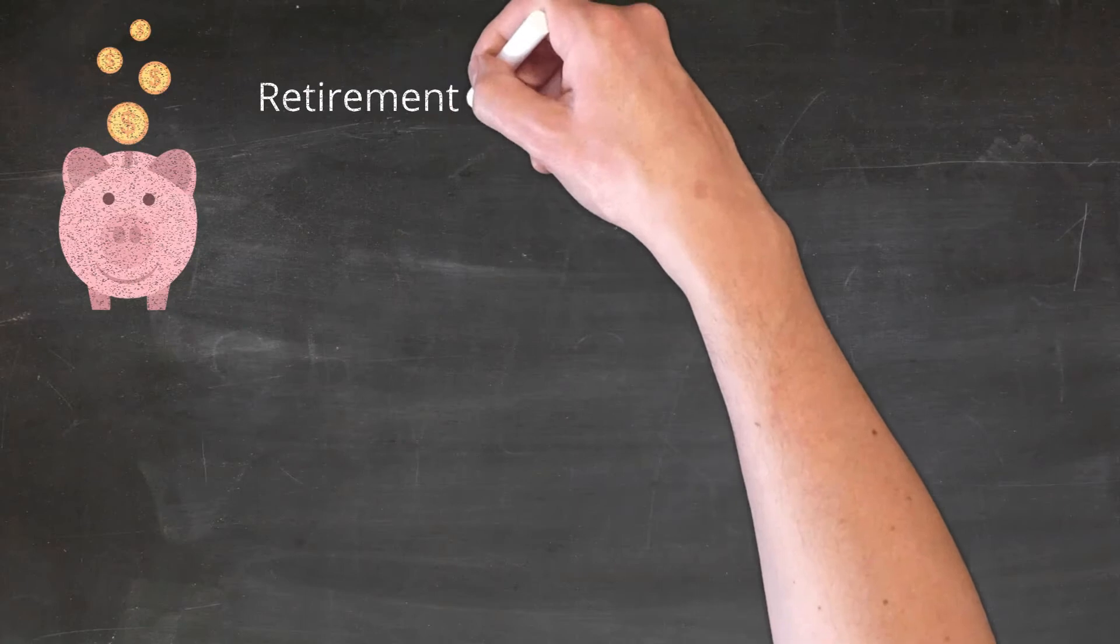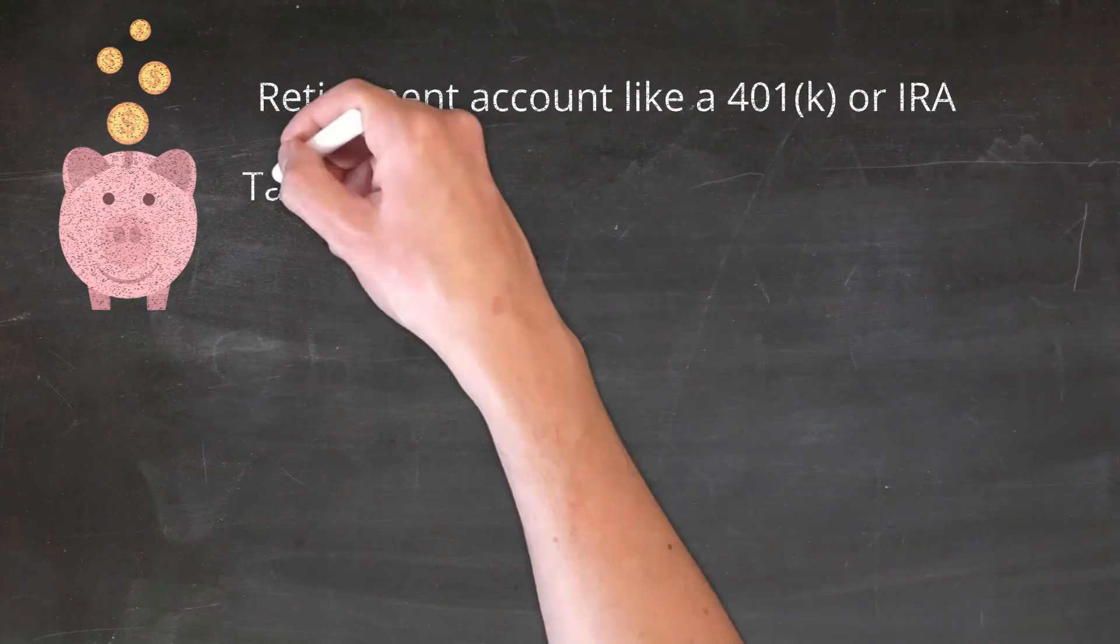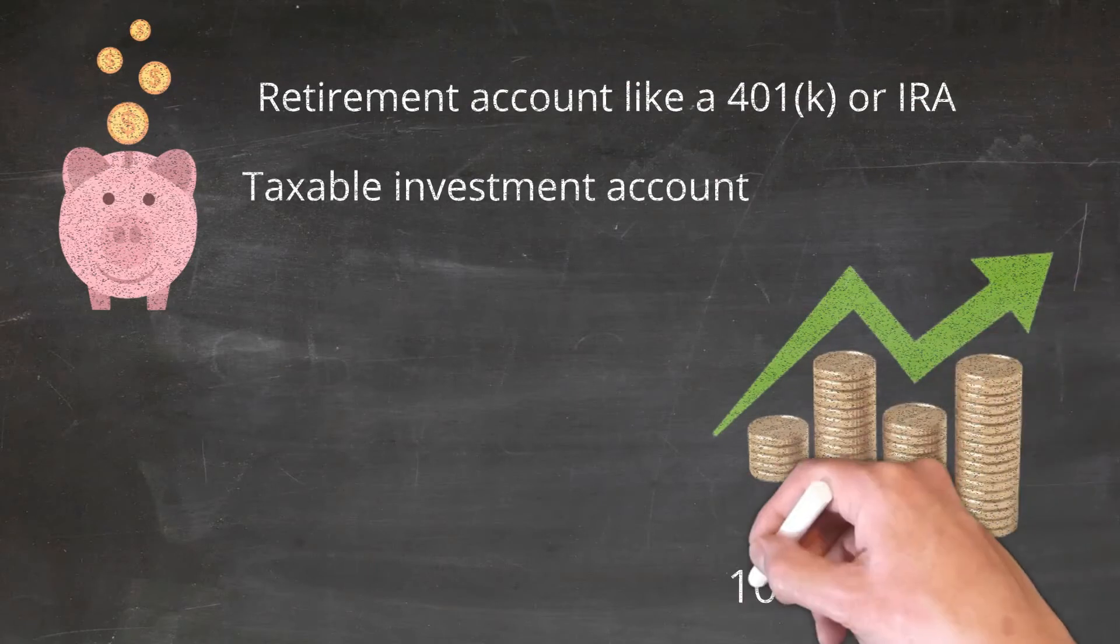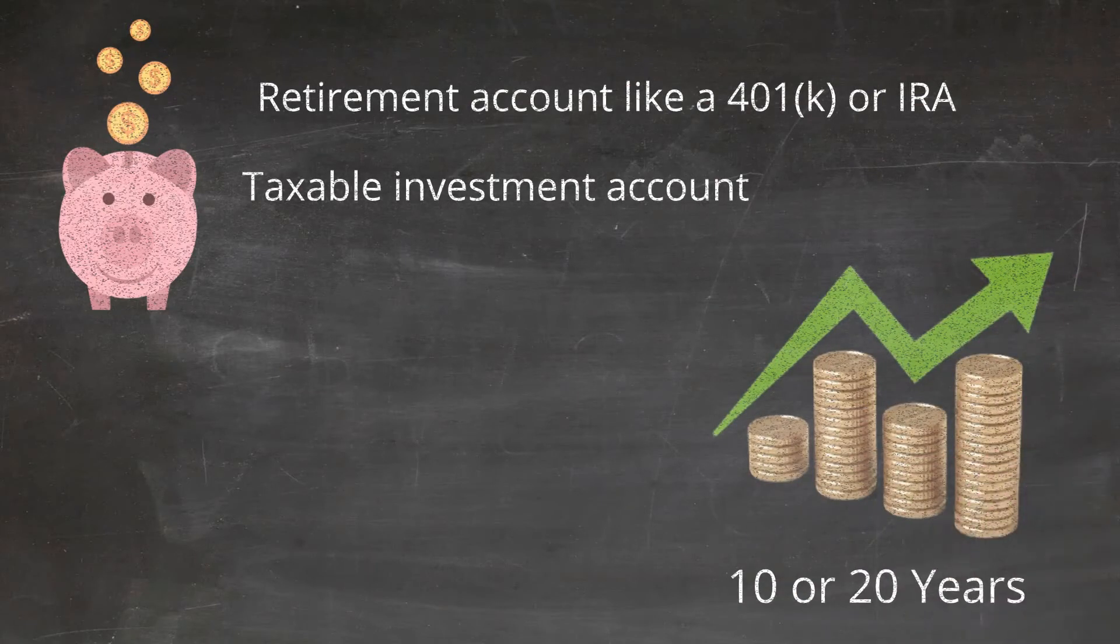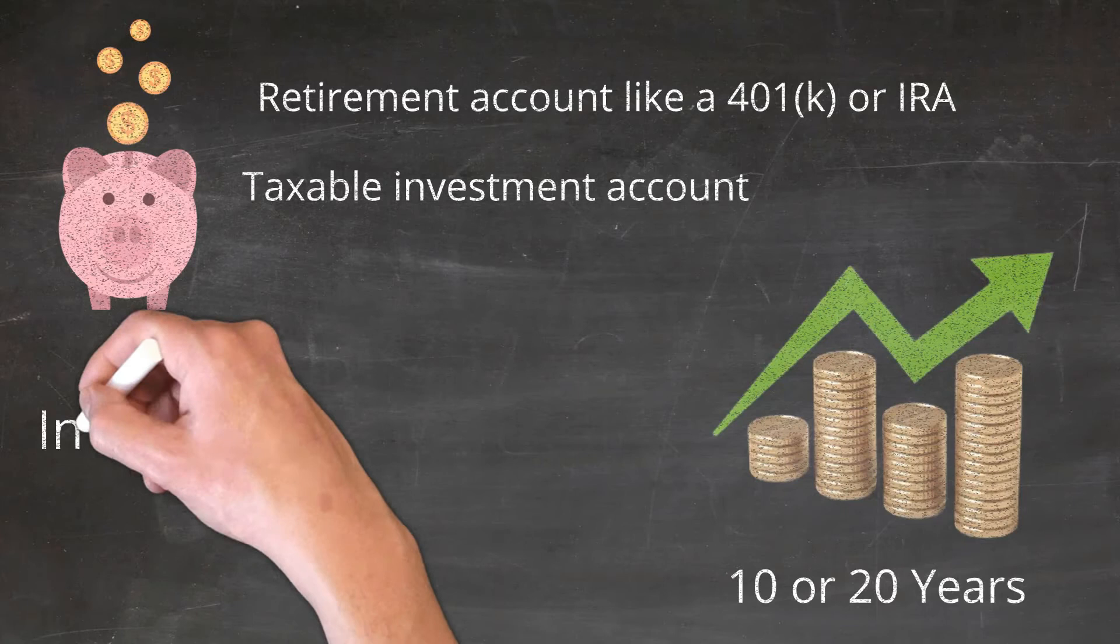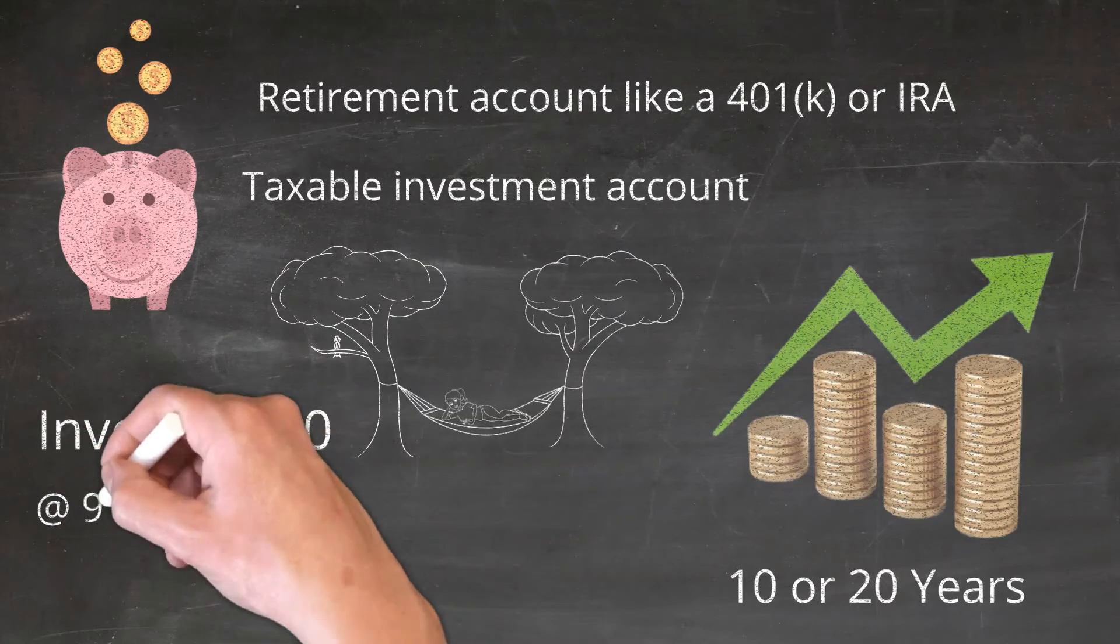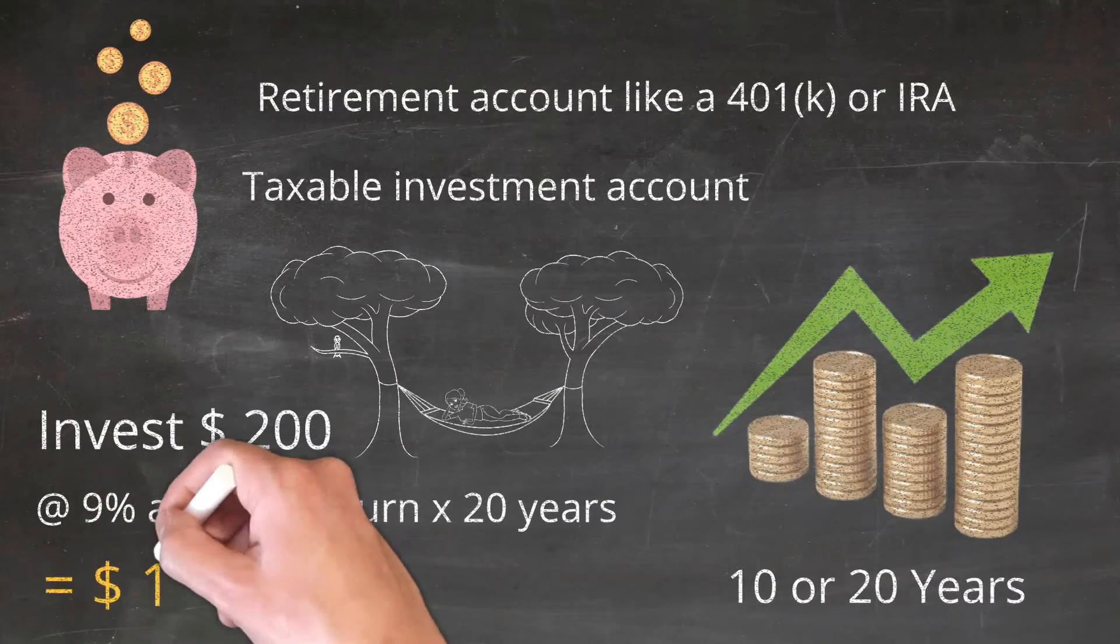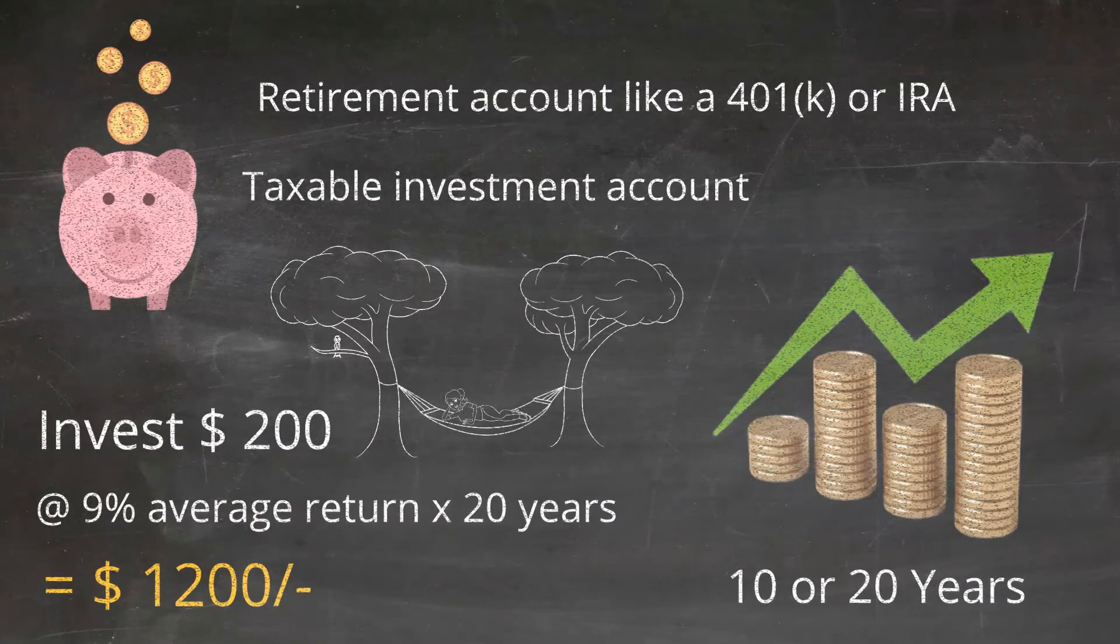If you put the money in, say, a retirement account like a 401k or IRA or taxable investment account, how much would that amount be worth in 10 years or 20 years? Let's say you invest $200 instead of spending it on a nice hammock at a percent average rate of return. That $200 could be worth $1,200 20 years down the line.